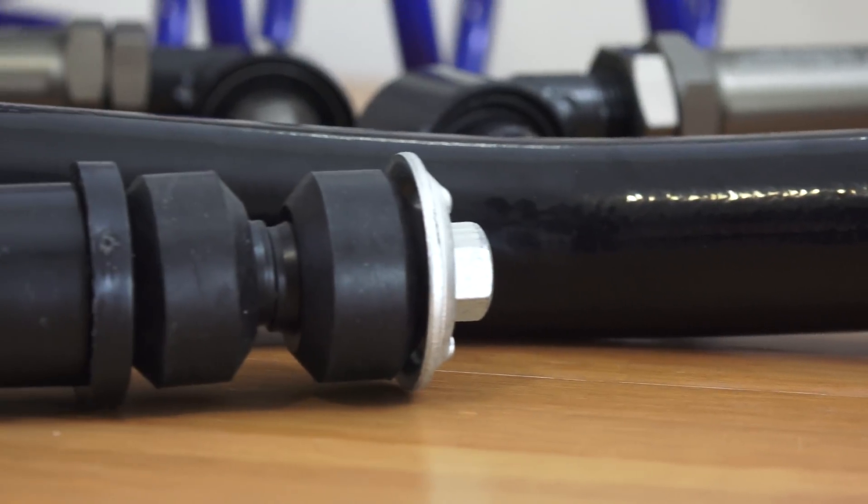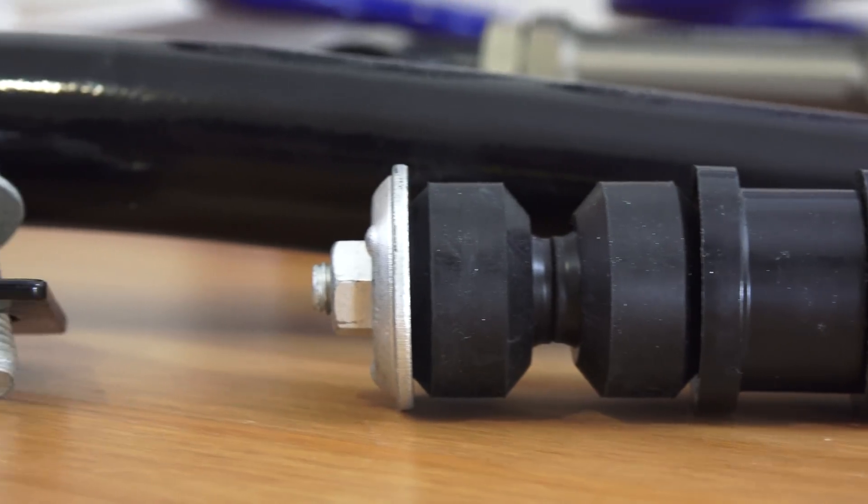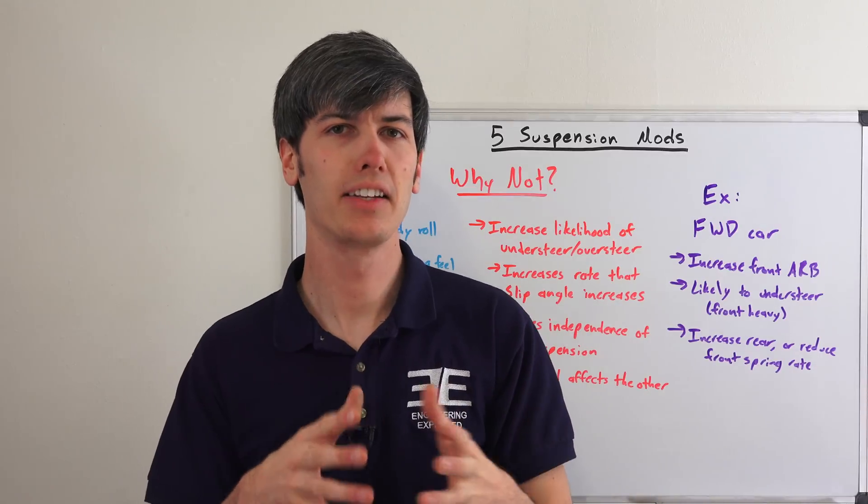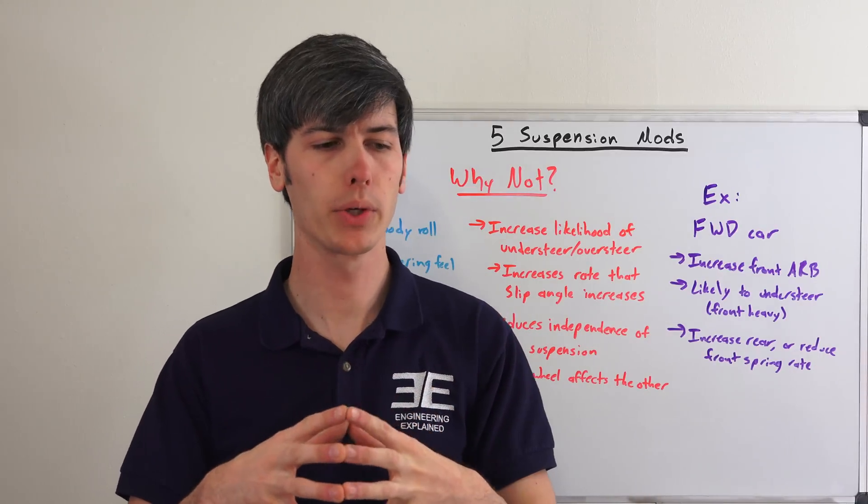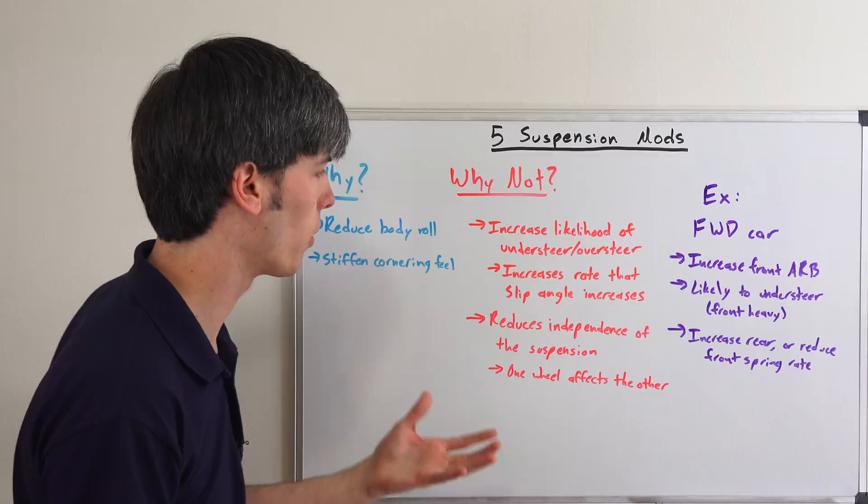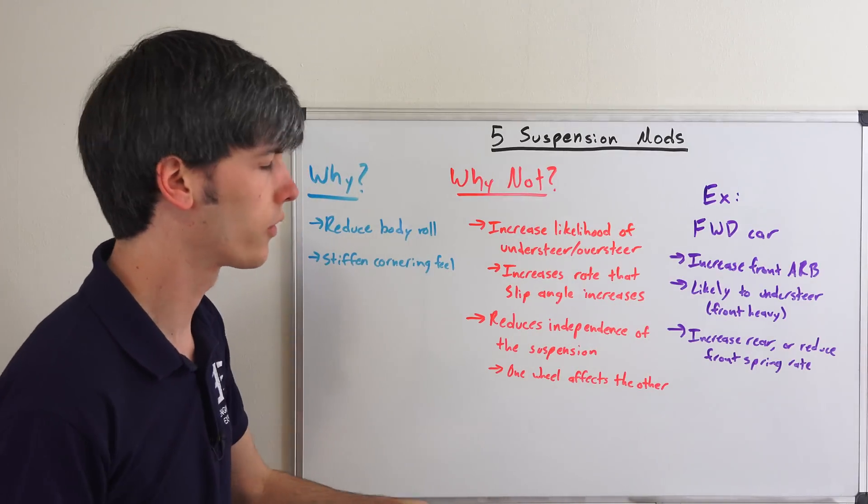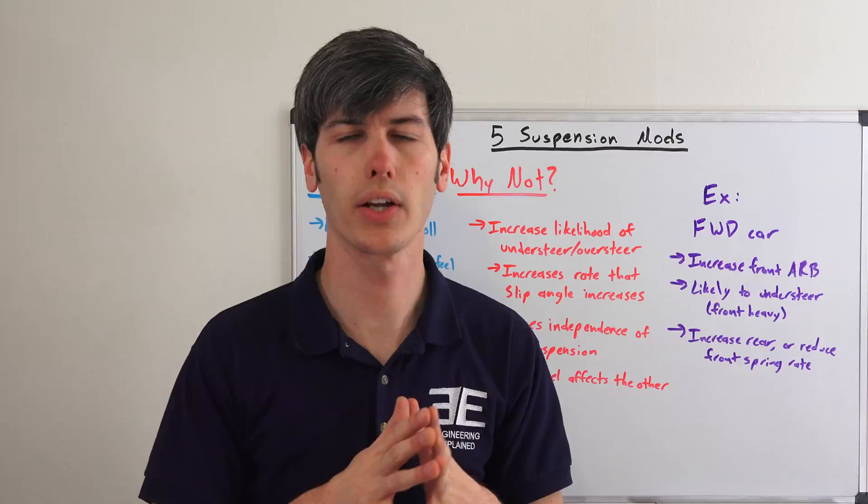Now the other reason you may not want to just stick on large anti-roll bars is that you reduce the independence of the suspension. We can all agree that an independent suspension is the best setup where you've got each wheel acting on its own individually rather than linked to the other wheel.